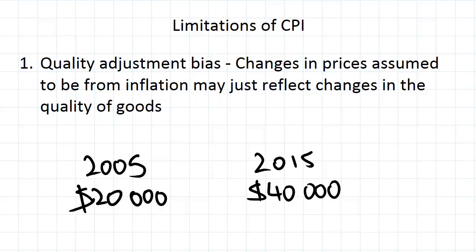But that's only looking at the quantities. It's not looking at the qualities of the goods. A brand new car from 2015 would most assuredly be better than a brand new car from 2005.